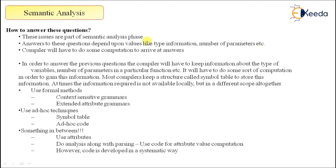The answer to this question depends on various values like type information, number of parameters, etc. The compiler needs to perform some computation to arrive at this answer. In order to answer this question, the compiler has to keep track of information such as the type of variable and number of parameters in a particular function.